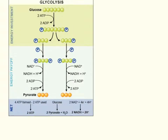In glycolysis, glucose gets broken down into eventually two molecules of pyruvate. In order to get from glucose to pyruvate, you have to have two molecules of NAD+. Whenever you go through this cycle, you lose two molecules of NAD and you create two molecules of NADH.